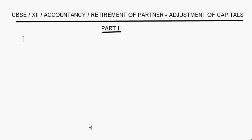Today let's take up retirement of a partner and adjustment of capitals. When a partner retires, the remaining partners may decide to adjust their capital in proportion to their new profit sharing ratio. When capitals are adjusted, there can be two cases: a deficit, where some partners have to bring in more capital, or a surplus, where excess capital has to be withdrawn.